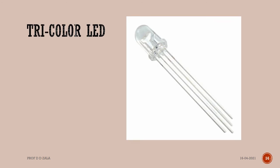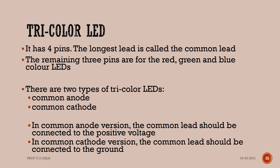Tricolor LED is an advanced version of LED which emits three different colors. It has four pins; the longest lead is called the common lead. The remaining three pins are red, green, and blue color LEDs. There are two types of tricolor LED: common anode and common cathode.